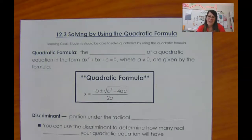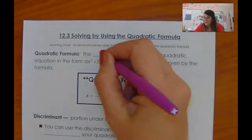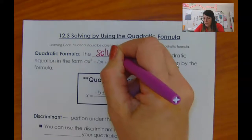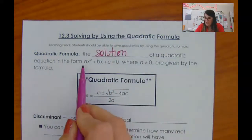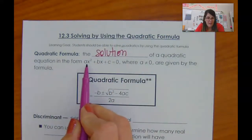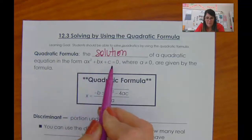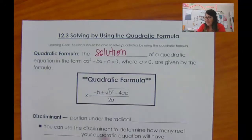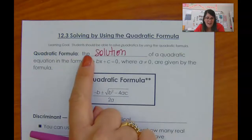Today we're learning another method to solve quadratic equations, and it's called the quadratic formula. The solution to a quadratic equation that looks like ax squared plus bx plus c equals zero — and a can't be zero because otherwise you wouldn't have an x squared.